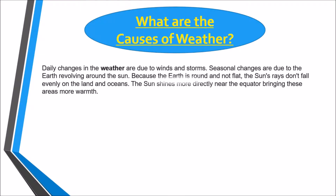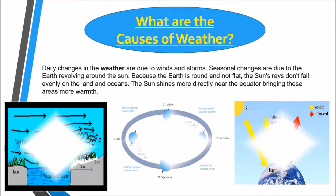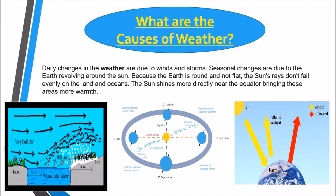What are the causes of weather? Daily changes in the weather are due to winds, and strong seasonal changes are due to the Earth revolving around the sun. Because the Earth is round and not flat, the sun's rays don't fall evenly on the land and oceans. The sun shines more directly near the equator, bringing these areas more warmth.